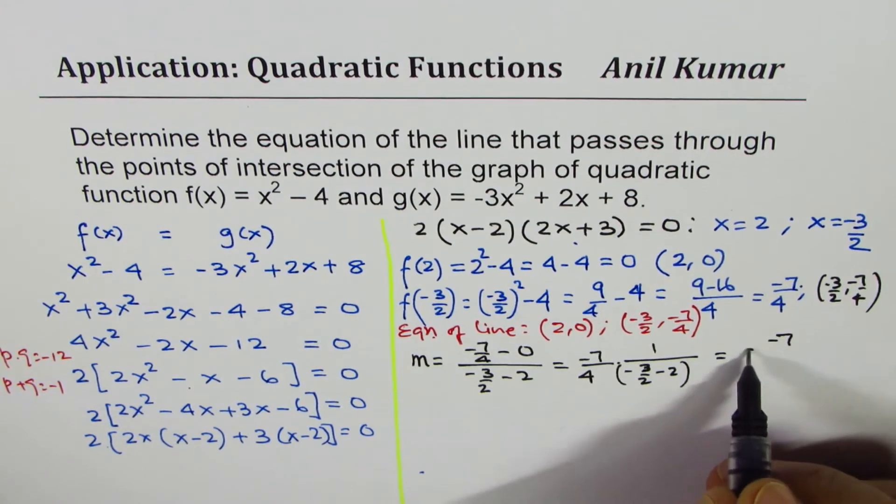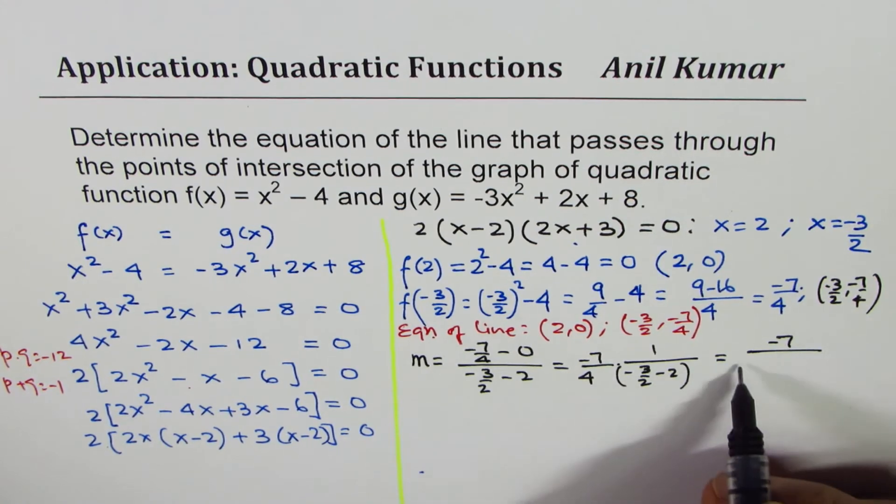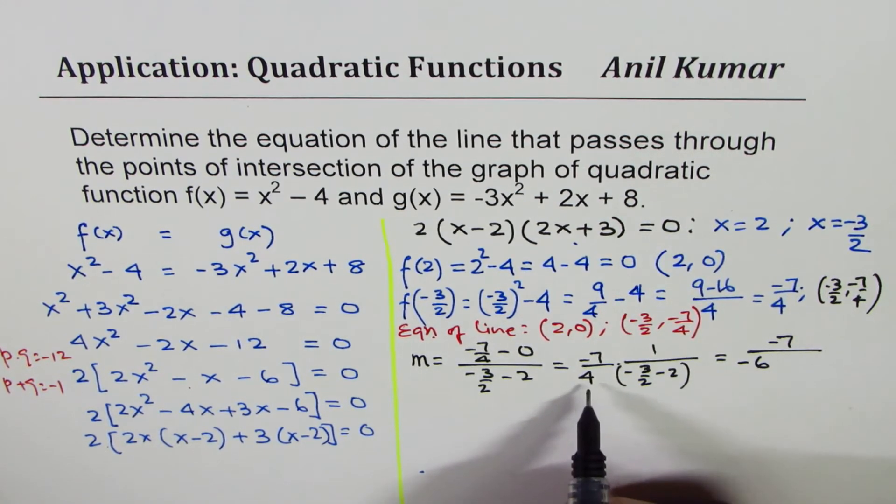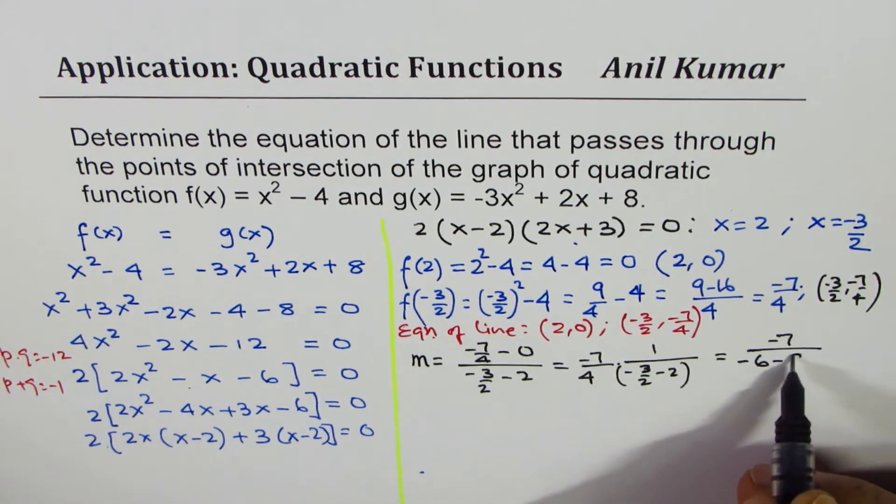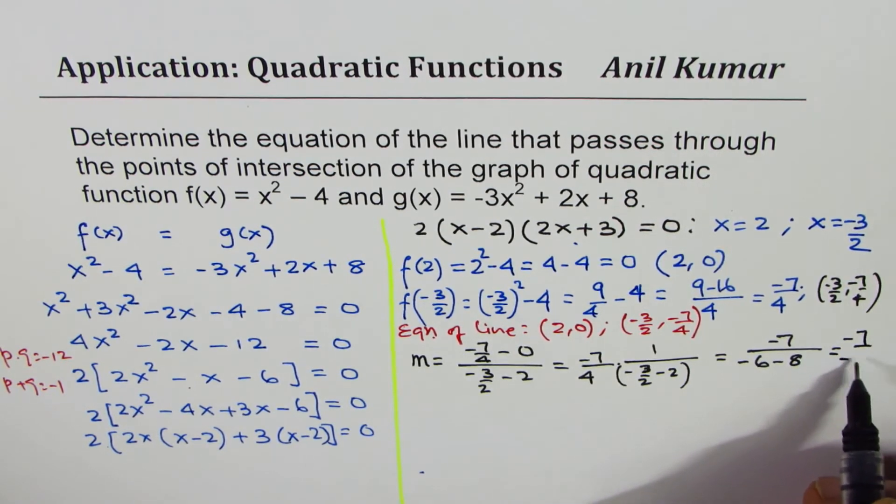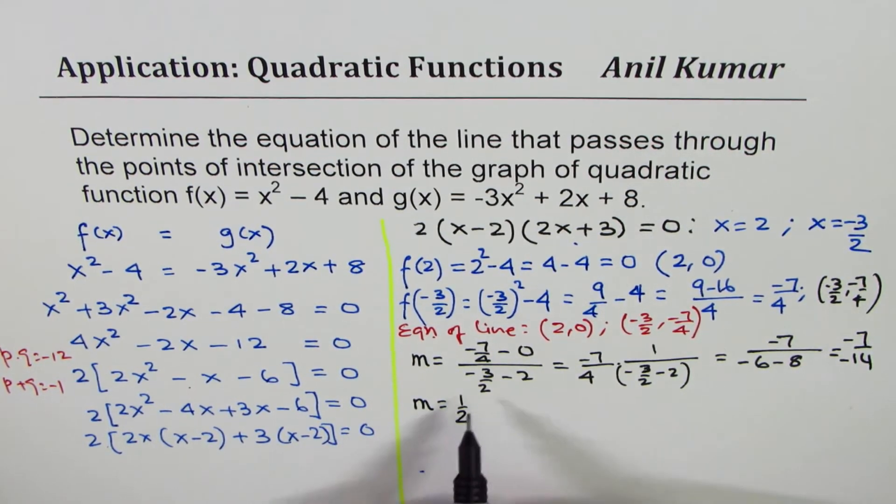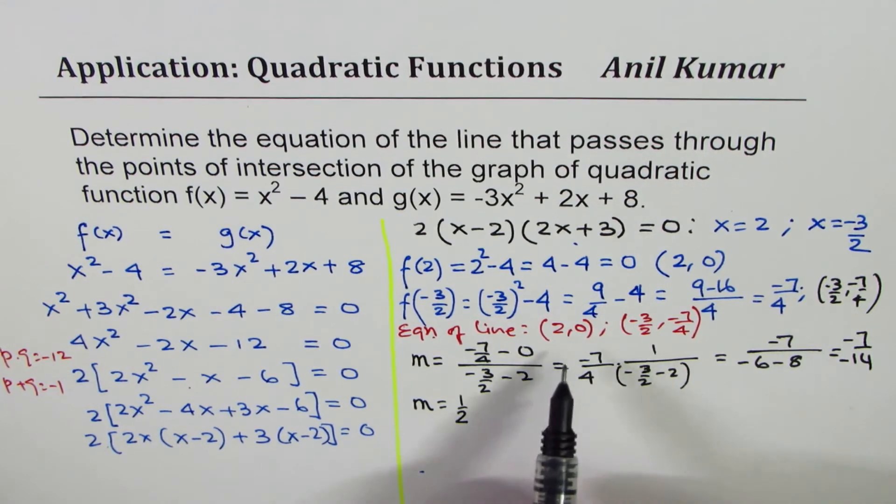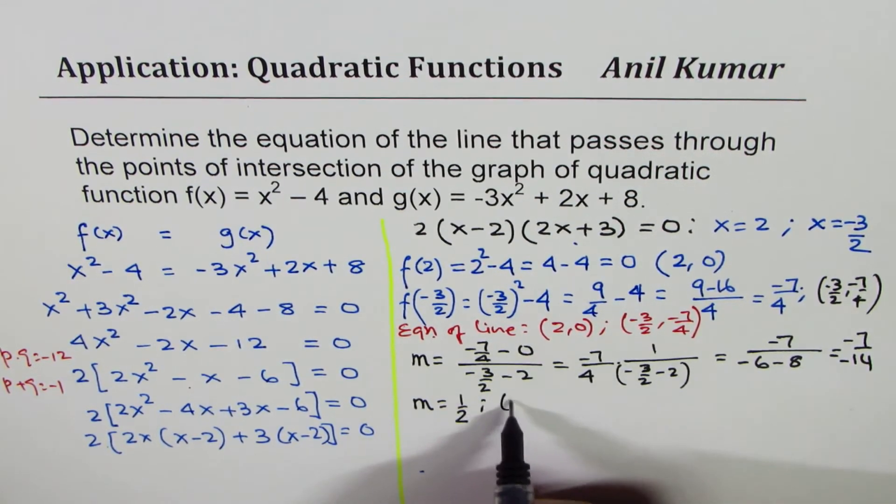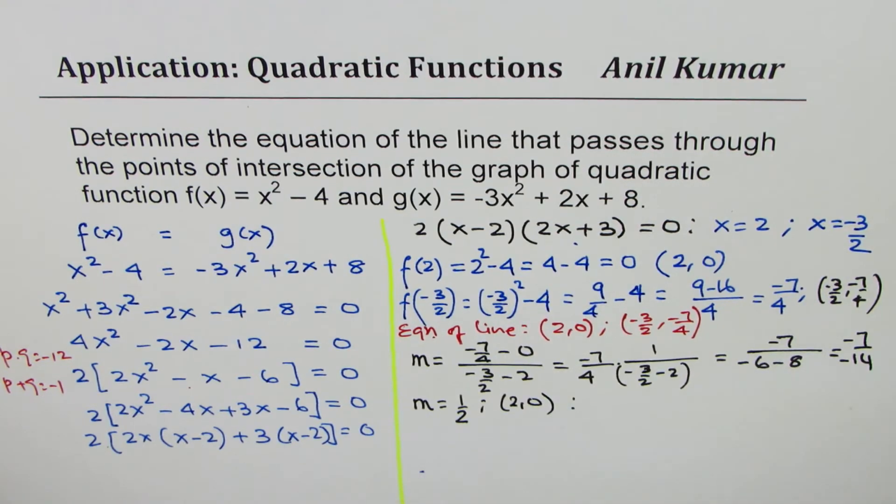-3/2 - 2 gives us -7/2. We get -7 over -14, which gives us a slope of 1/2. So we have slope of 1/2. We can use the point (2, 0) to find equation of the line.